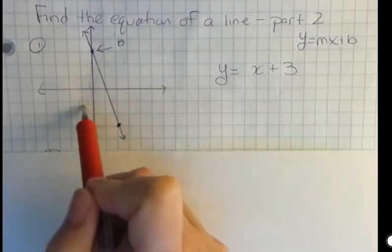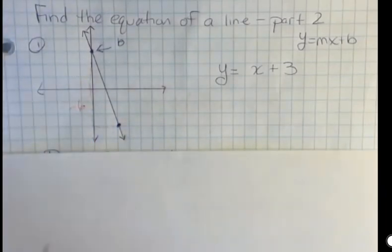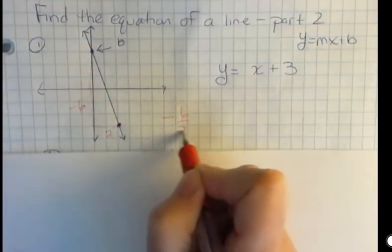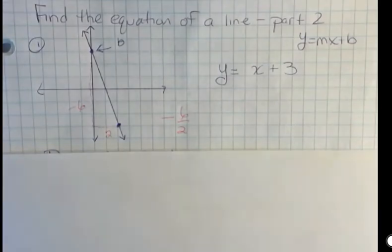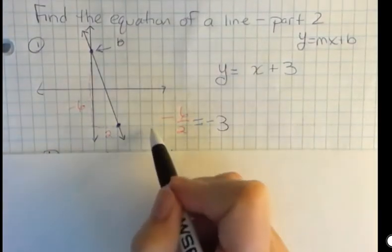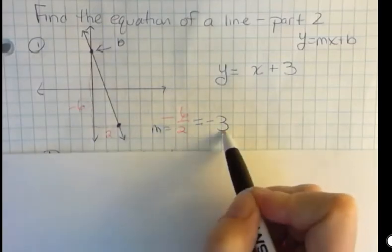That's negative six, because I went down by six. And then I'm going over two. Well, negative six over two can be reduced to negative three. So my slope is negative three.